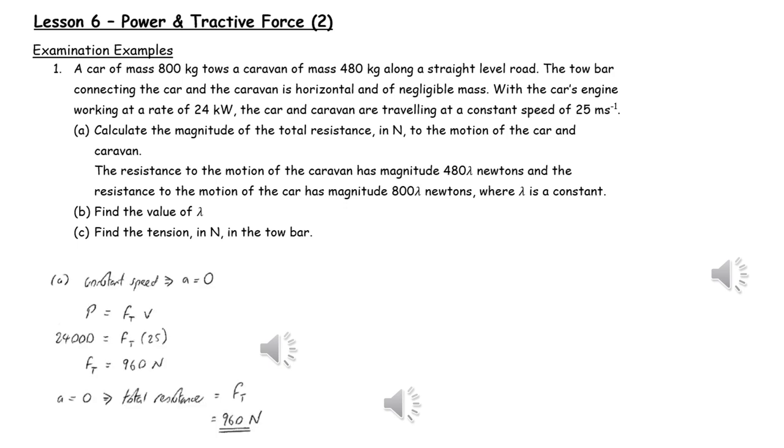We can use power equals tractive force times velocity to find the tractive force of the car. Because there is constant speed, there's no acceleration, and hence the total resistance must equal the tractive force. We now know the total resistance is 960 newtons, and therefore 480 lambda plus 800 lambda must equal that 960.